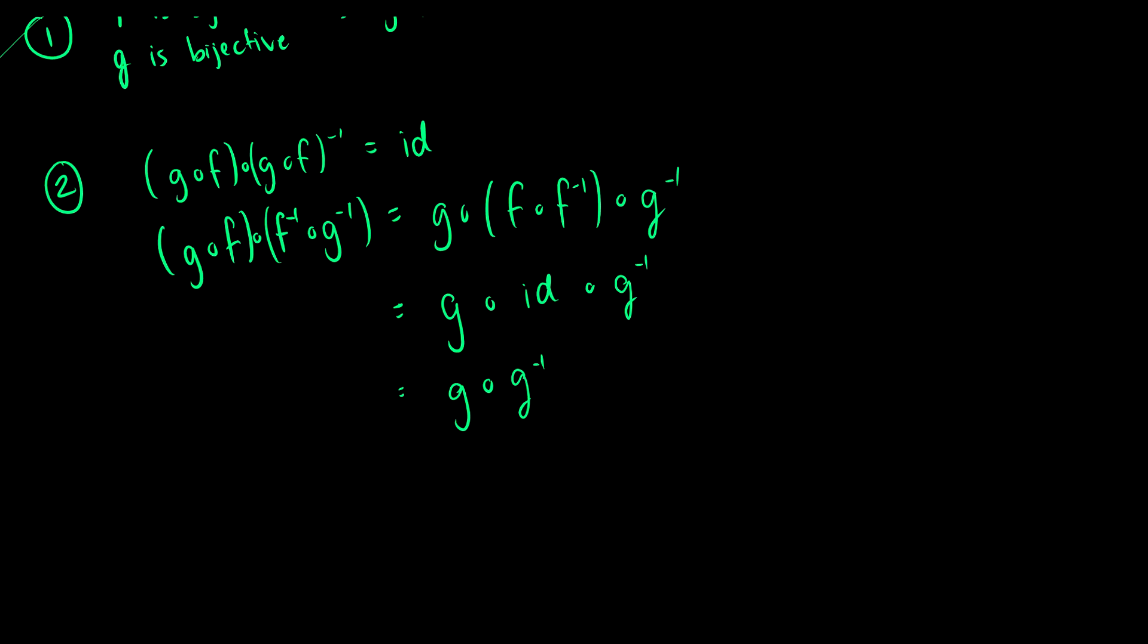So in the end, we get g∘g⁻¹, which again gives us back the identity function. Therefore, because inverses are unique, we know that g∘f inverse works as f⁻¹∘g⁻¹. Therefore, the two are equivalent. What you have to do on your own is prove that this works on the other side as well, since inverses go in both directions. But you can see pretty clearly that if we flip the side, then the g⁻¹ and g are going to group together first, and then f⁻¹∘f will group together.